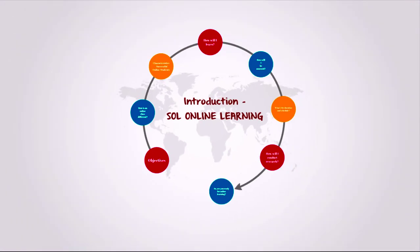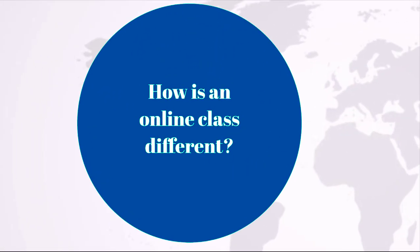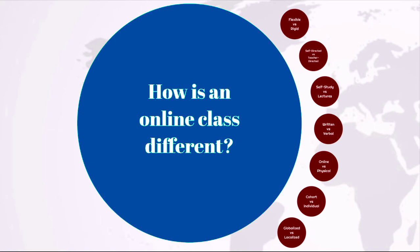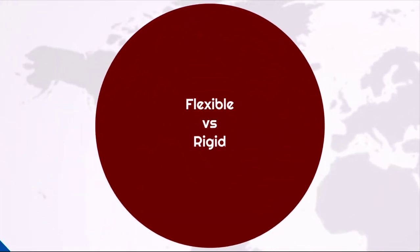Let us begin by answering this question: How is an online class different from an on-site or face-to-face class? First of all, an online class is more flexible. You get to choose a time in the week when you are available. A face-to-face class tends to have a more rigid schedule.